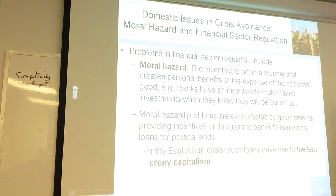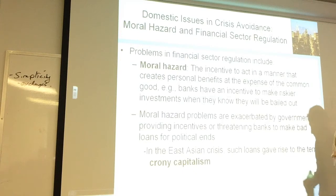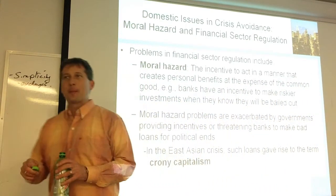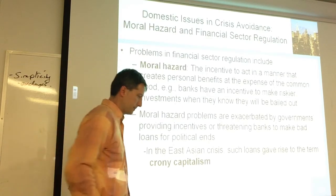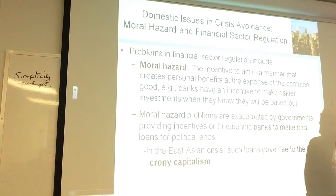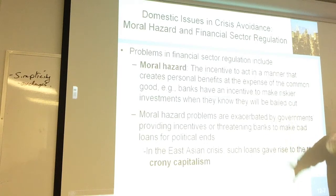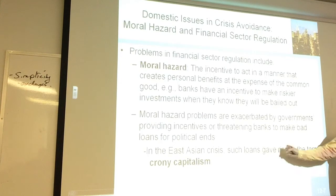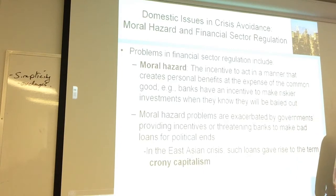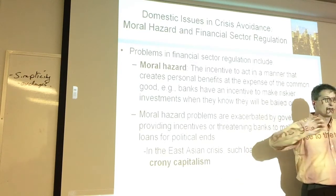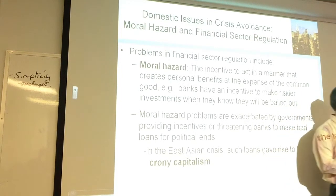Crony capitalism — getting together with your cronies. It might be in their personal self-interest to steer government contracts to their buddies. If you wine and dine the congressman enough, send them on a trip, fly them out on a private jet, maybe you can get that subsidy or favorable situation in the tax code. Some financial crises have stemmed from that type of crony capitalism going on over time.